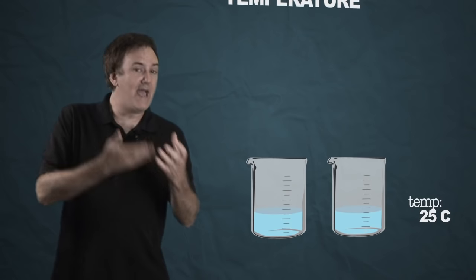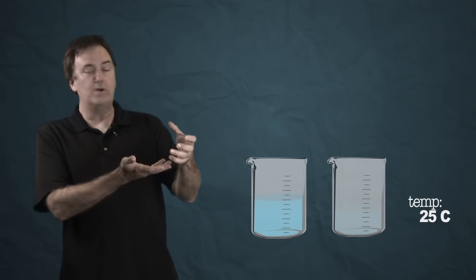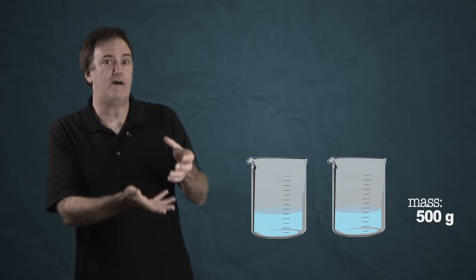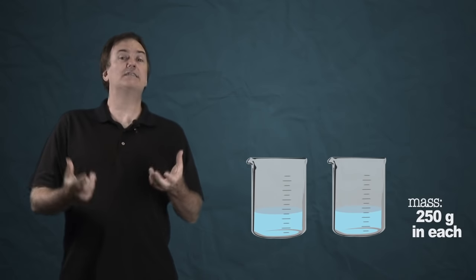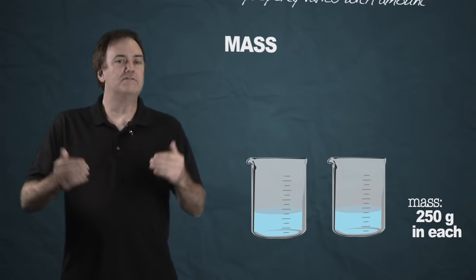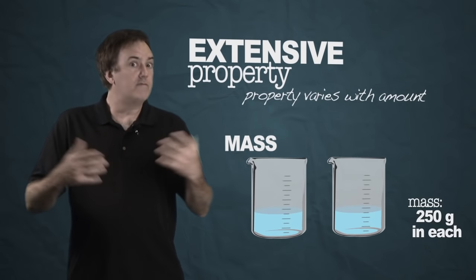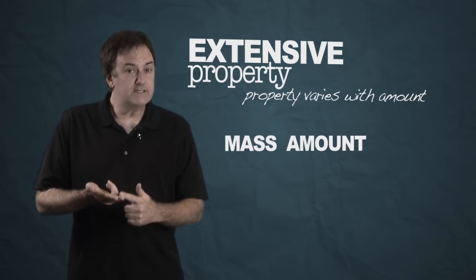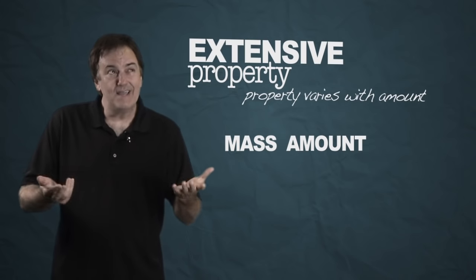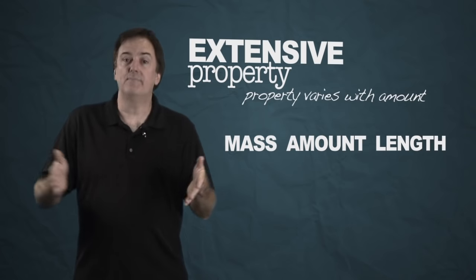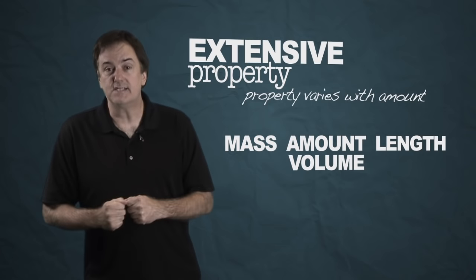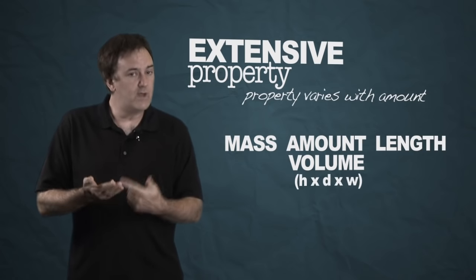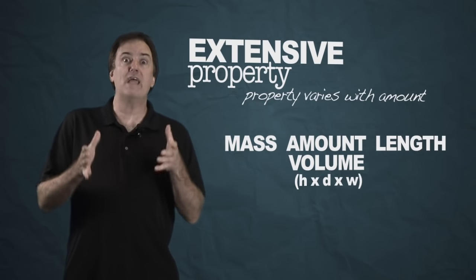Compare that to the mass of water. If I have a glass of water with a mass of 500 grams and I pour half of it out, the mass is now 250 grams — that's because mass is an extensive variable. Extensive properties vary with amount. We quantify amounts in grams, moles, and length. Volume is a great example: height × depth × width gives you volume, which is extensive.